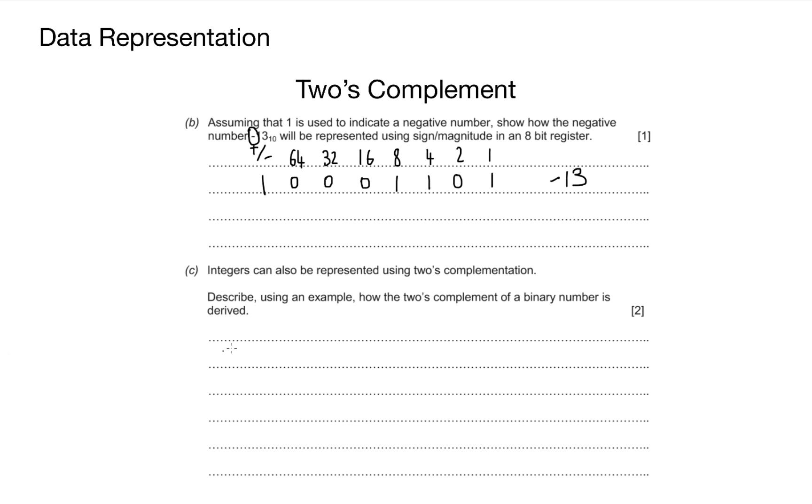For the second question, integers can also be represented using two's complement. Describe using an example how the two's complement of a binary number is derived. This one again, nice and simple explanation. Starting from the least significant bit, copy up to and including the first 1, and flip the rest. Always use an example.